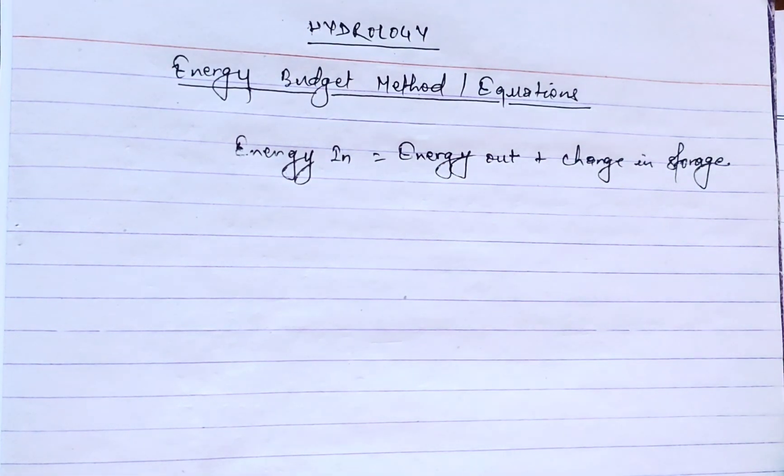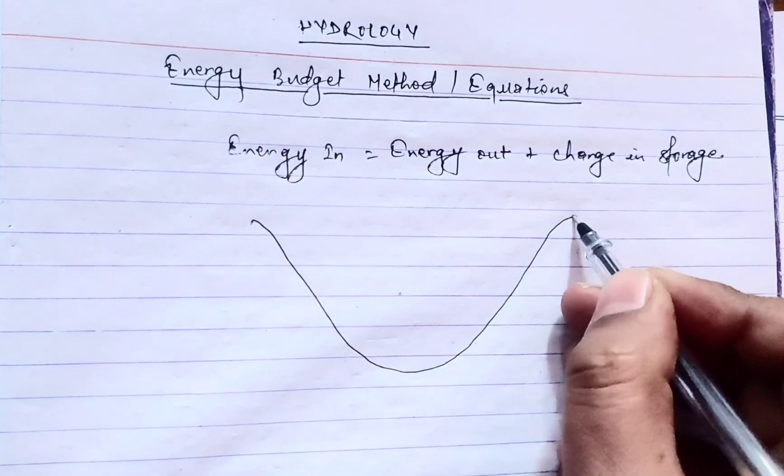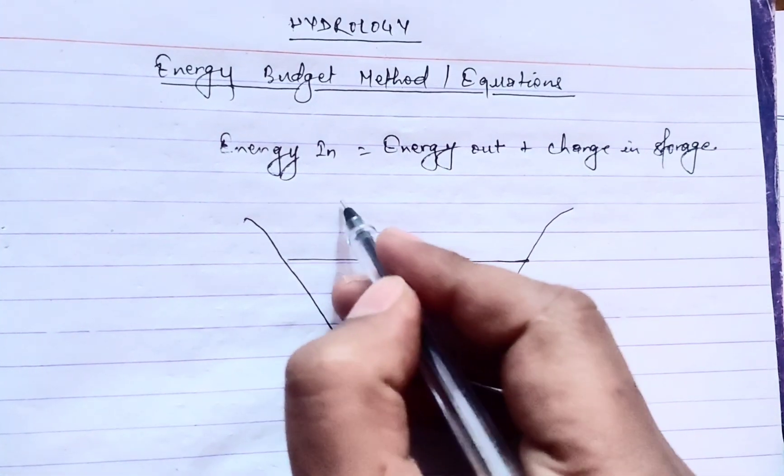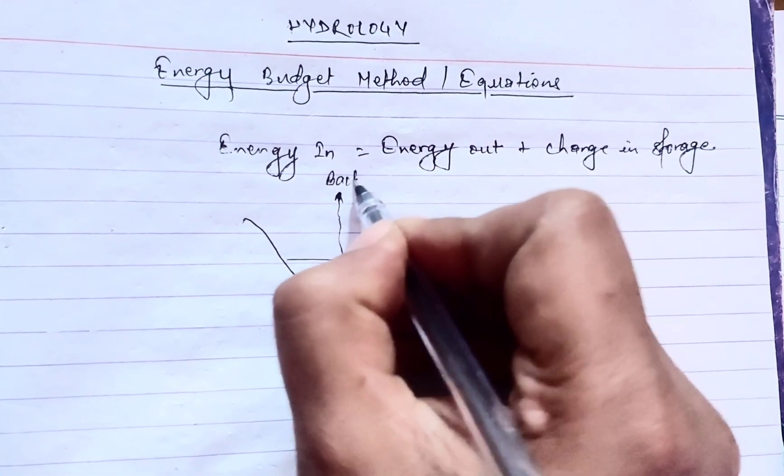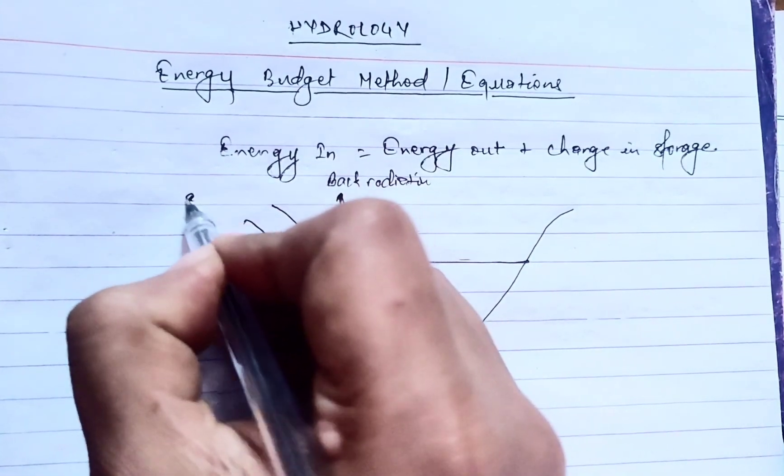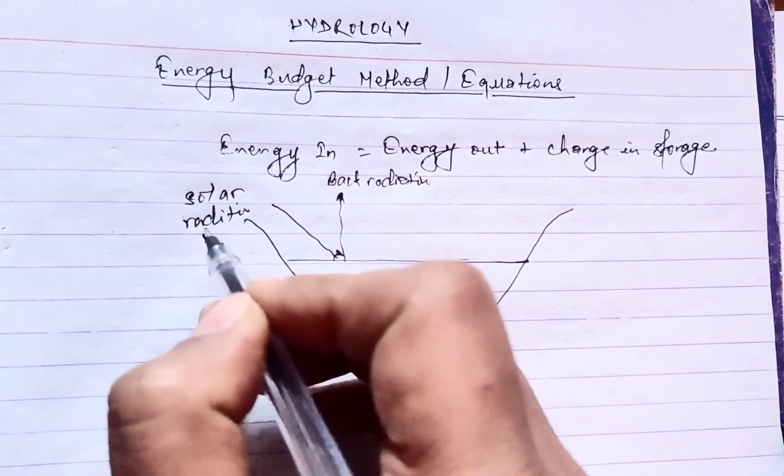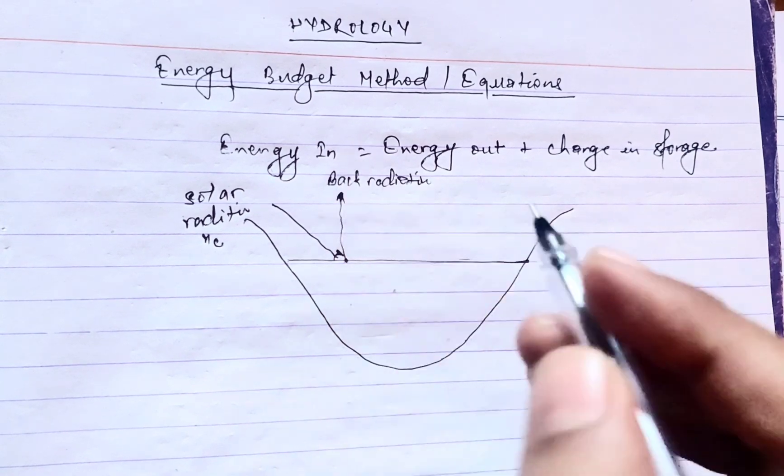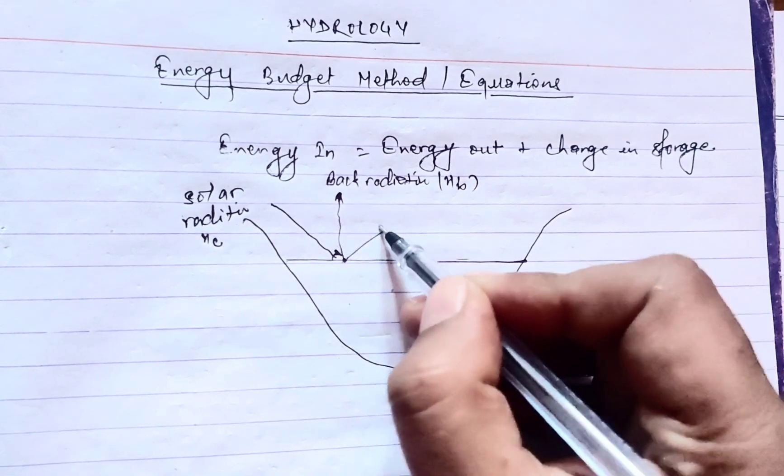So first of all, let's draw a lake with water at a certain level. This is back radiation, and this one is solar radiation. Solar radiation Hc will strike at the water level and goes back as Hb, which is called reflection.